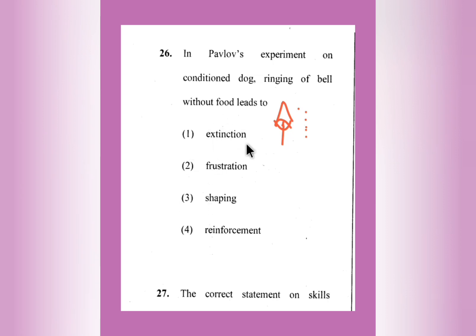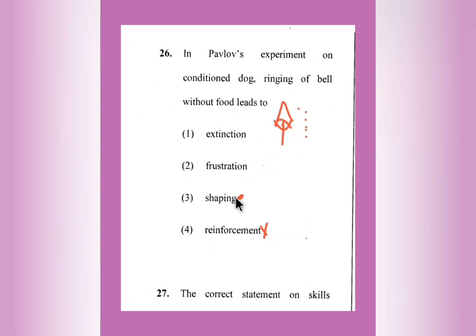So what happens here — is this extinction, frustration, shaping, or reinforcement? It is definitely not reinforcement — they are not encouraging the act. It is not shaping either — nothing constructive is being given to the dog. The dog is not undergoing frustration. Here the right answer is extinction. They are not giving food but only ringing the bell, yet the dog salivates. That condition is extinction.